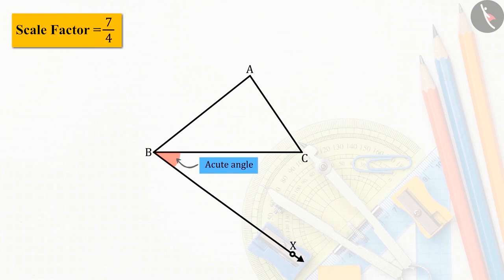Now, let us look at the larger number in the scale factor, which is 7 here. So, on ray BX, 7 arcs of equal radius